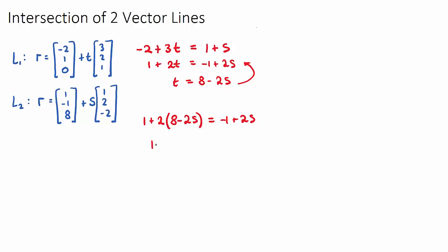If I expand this bracket, 1 plus 2 times 8 is 16, and then minus 4s is equal to negative 1 plus 2s. I will bring the negative 4s over and add it to 2s. So 6s and 1 plus 16 is 17, and I'll add another 1 over, it'll be 18. Therefore, s is equal to 3.